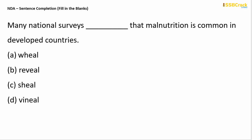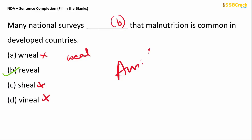Question: 'Many national surveys ___ that malnutrition is common in developed countries.' The four options are: wheel, reveal, shield, and vinyl. The correct answer is 'reveal,' which means 'shows.' 'Wheel' means to mark with a weal (a wound), and the other options carry no relevant meanings here. So option B, reveal, is your answer.